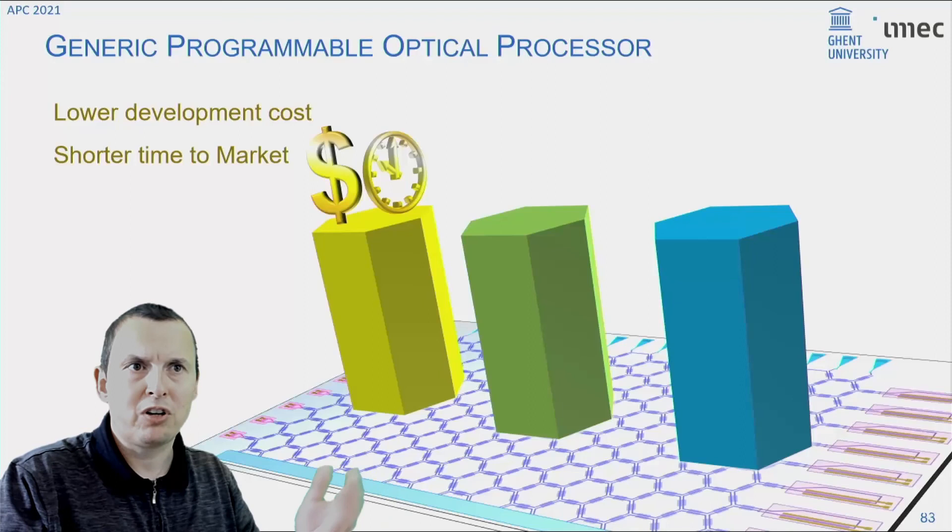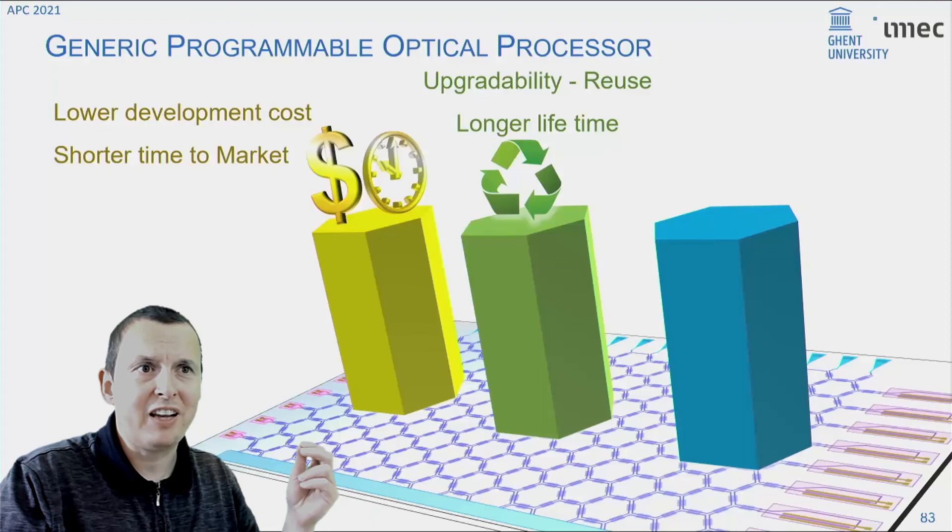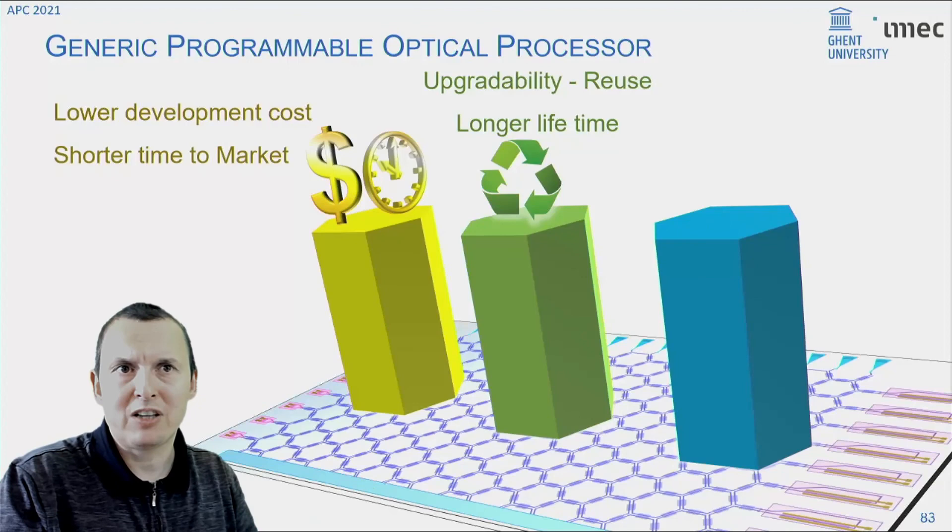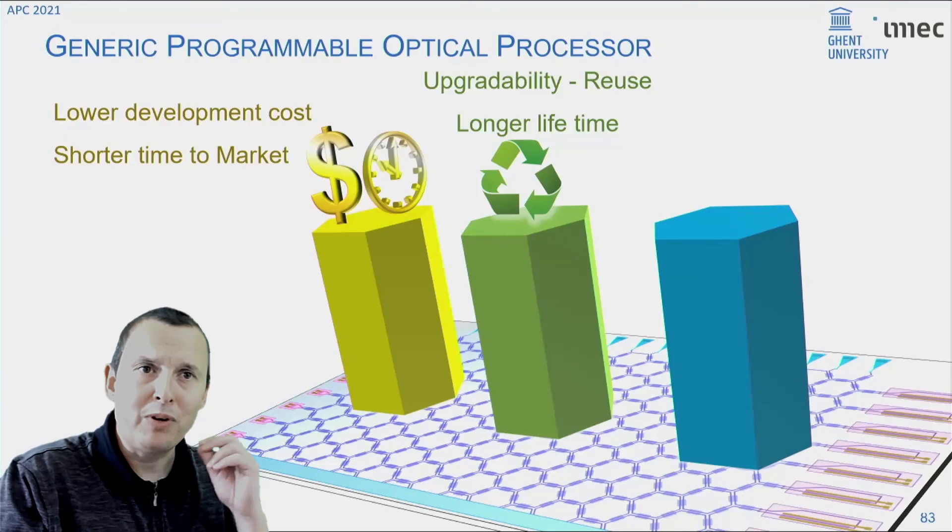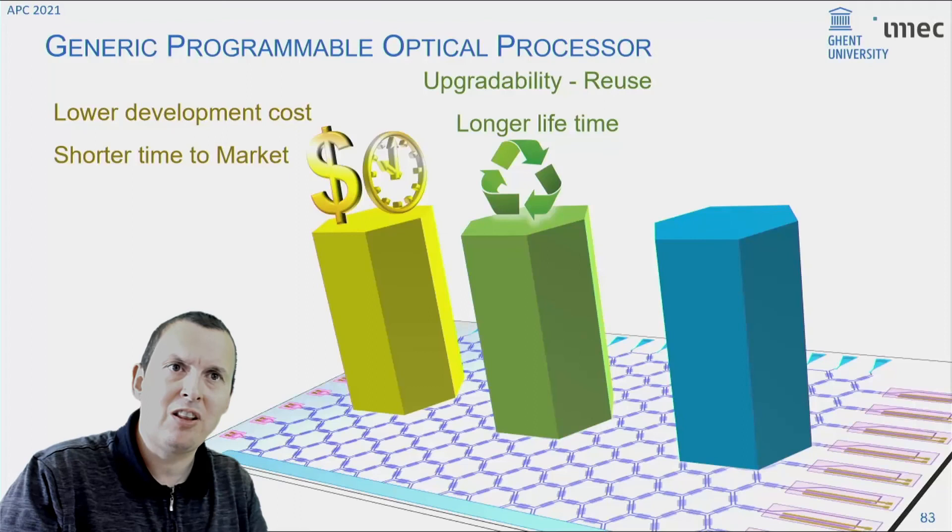Now, what you end up with, if you can combine all this, is indeed a generic programmable optical processor that can do quite a lot of functions, both for microwave and optical applications. Now, what this gives you is a quite unique advantage because today building photonic circuits is quite a costly and specialized enterprise. If you have a programmable photonic circuit, your development time for new applications would be drastically reduced. And potentially, if you build a new application, you would have a lower cost and much faster time to market.